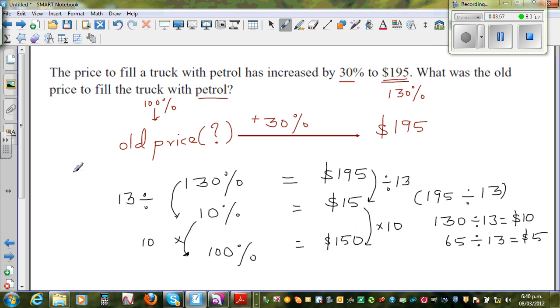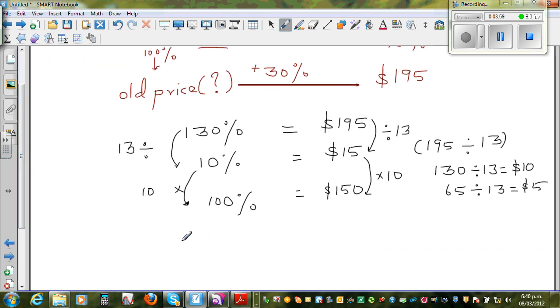So the old petrol price is $150. That's the answer. So let's confirm whether the answer is right. I want to add 30%.